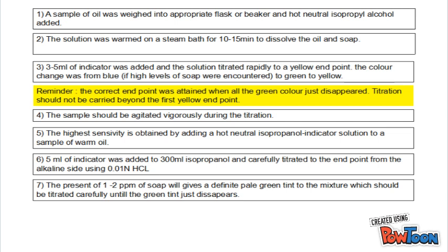Higher sensitivity is obtained by adding hot neutral isopropyl indicator solution to a sample of warm oil. 5 ml of indicator was added to 300 ml isopropanol and carefully titrated to the endpoint from the ACS side using 0.01N hydrochloric acid. The presence of 1–2 ppm of salt will give a definite green tint to the mixture, which should be titrated carefully until the green tint just disappears.